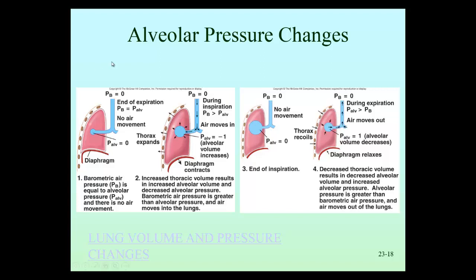So we have a nice little diagram here showing, in a very simple way, the pressure changes that occur during breathing. Just to keep things simple, we're going to assign the outside air — the barometric pressure, PB — which is normally 760 millimeters of mercury at sea level, a value of zero. So we can compare what's happening in the alveoli relative to the outside air as breathing occurs. When we're not actively inhaling or exhaling, there's no movement of air, so the pressures in the outside air and in the alveoli are both zero.